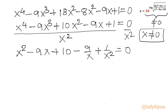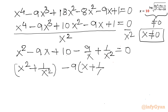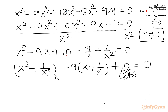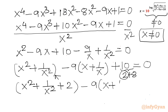Grouping the first and last terms together, then the second and second-last terms with −9 as a common factor, and keeping the constant 10, we split 10 as 2 + 8. We get (x² + 1/x² + 2) − 9(x + 1/x) + 8 = 0.